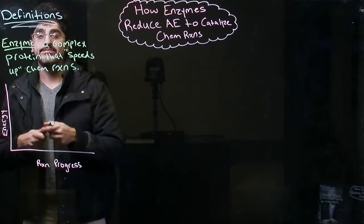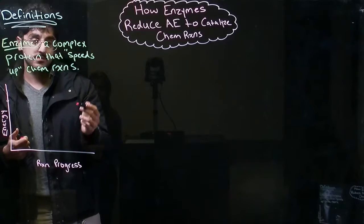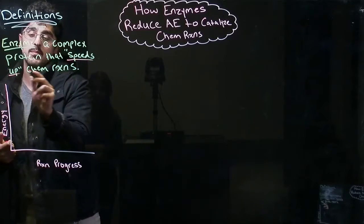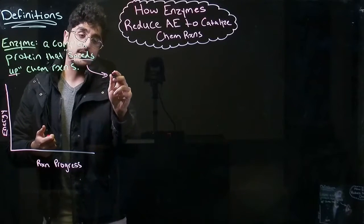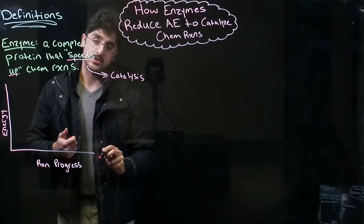So first and foremost, what is an enzyme? An enzyme is a complex protein that speeds up chemical reactions. Now we have an actual term for speeding up a chemical reaction. That's called catalysis. So it's catalyzing the chemical reaction.